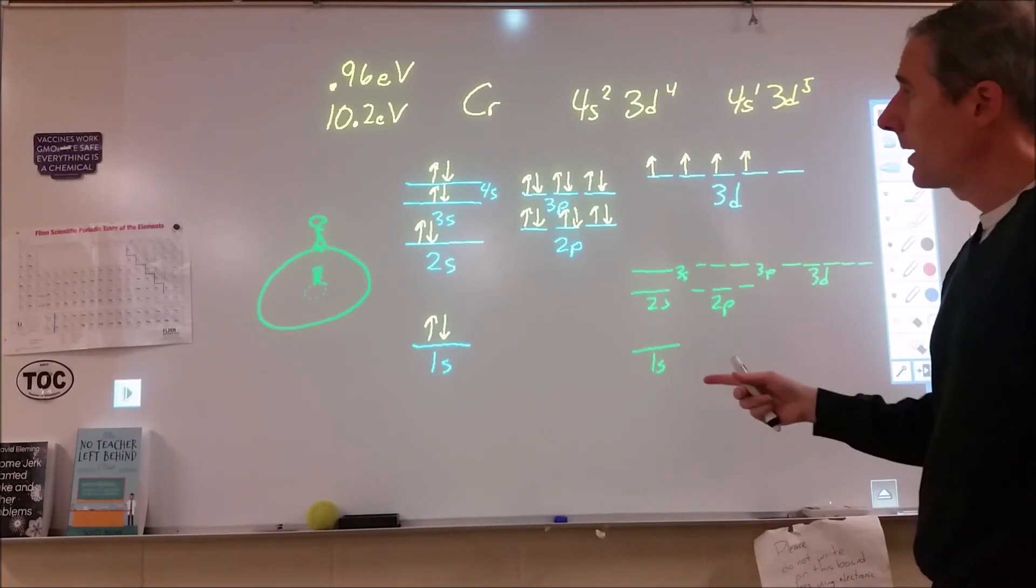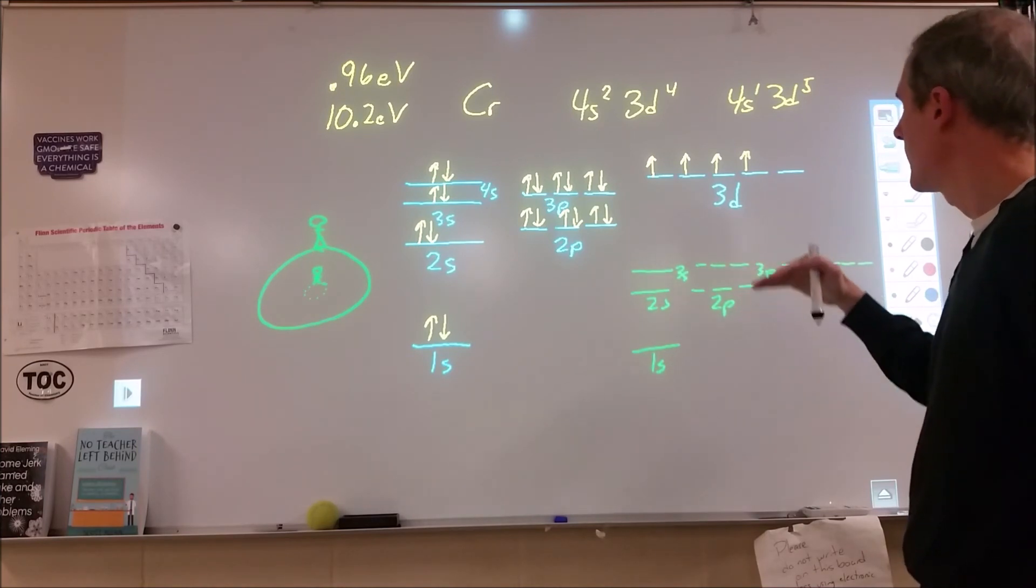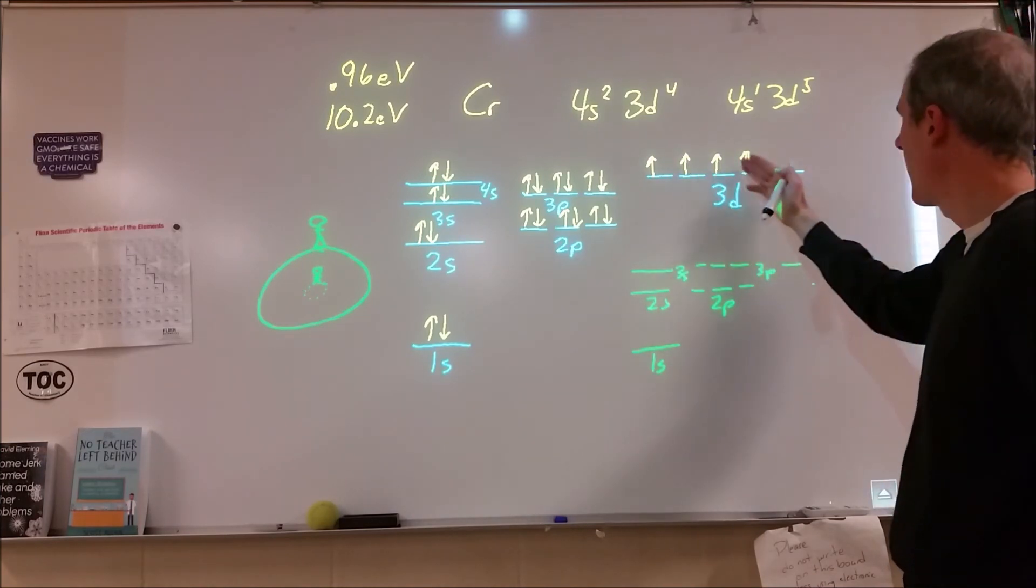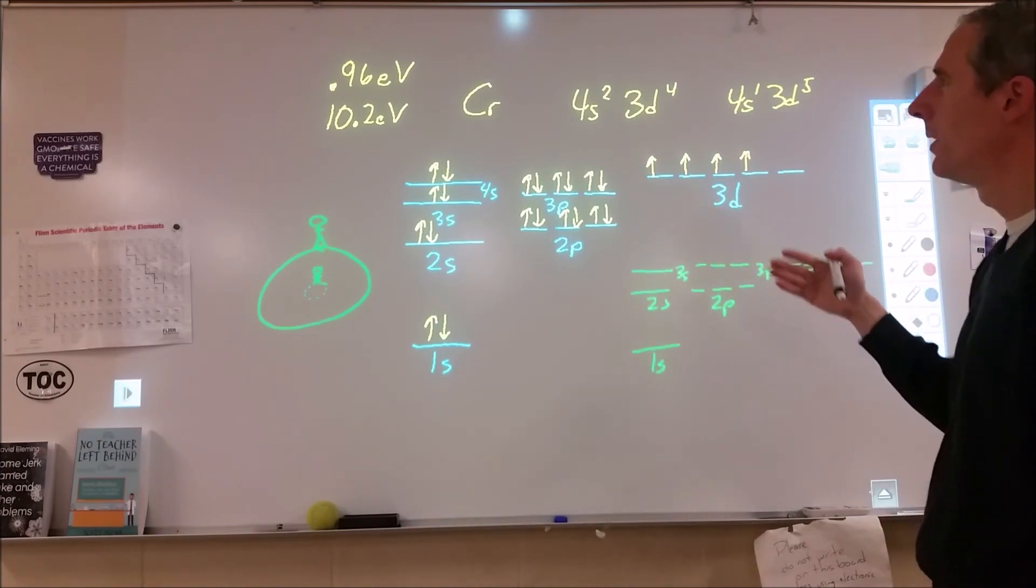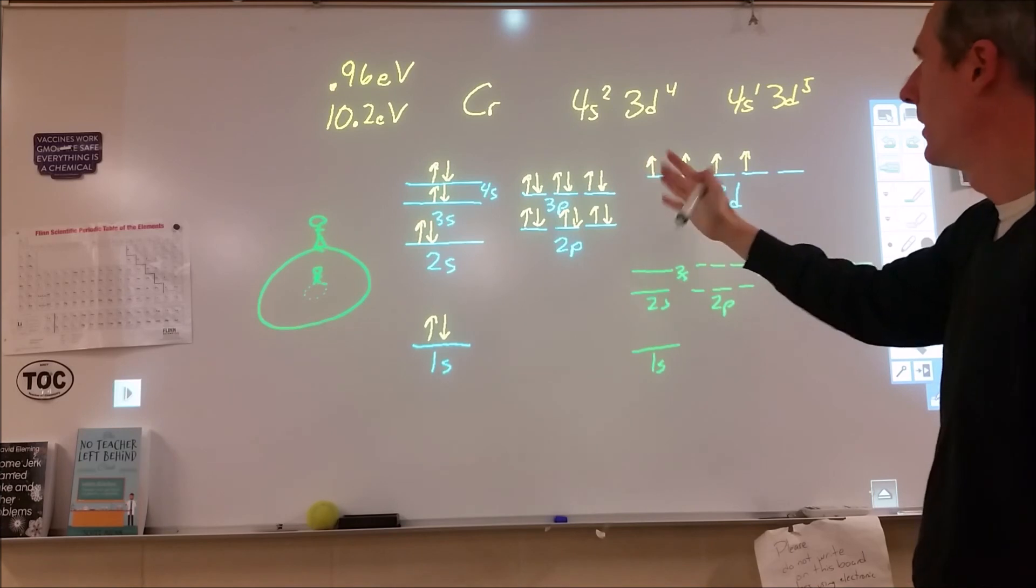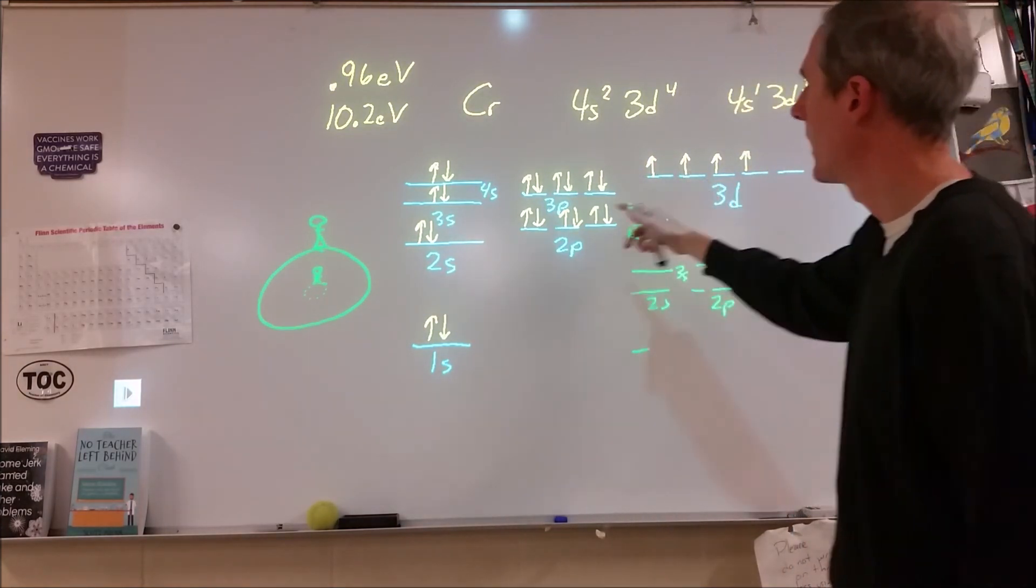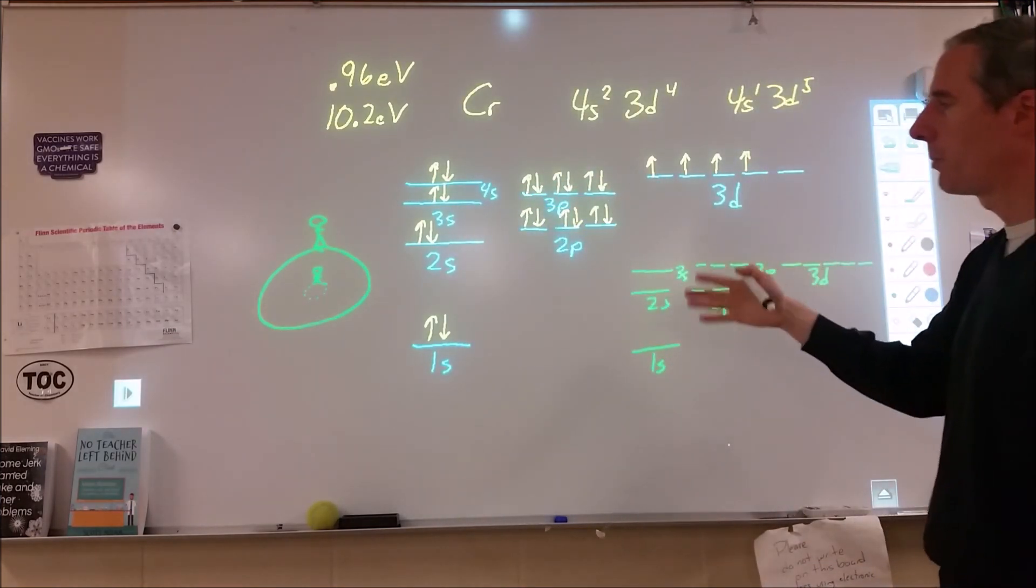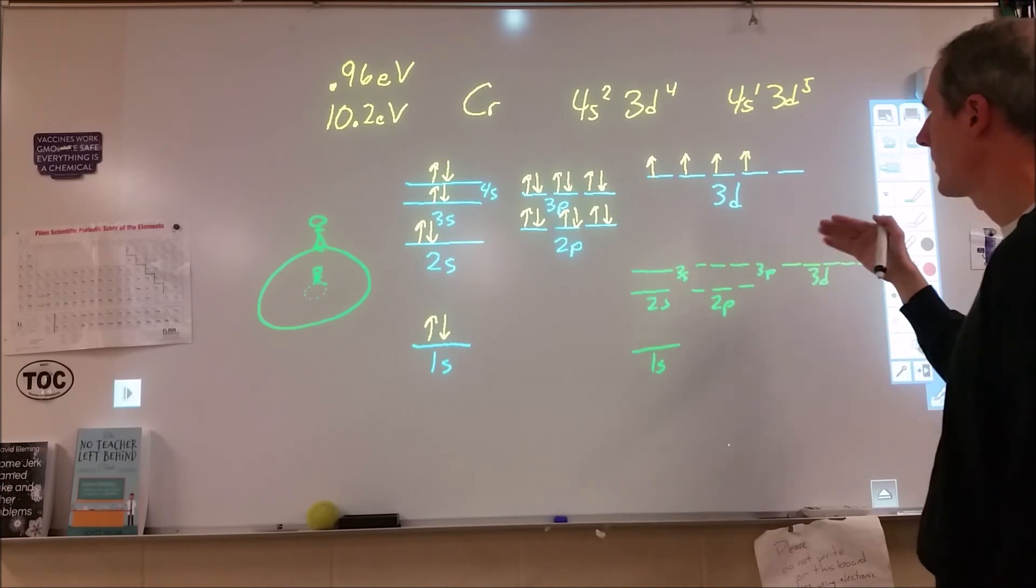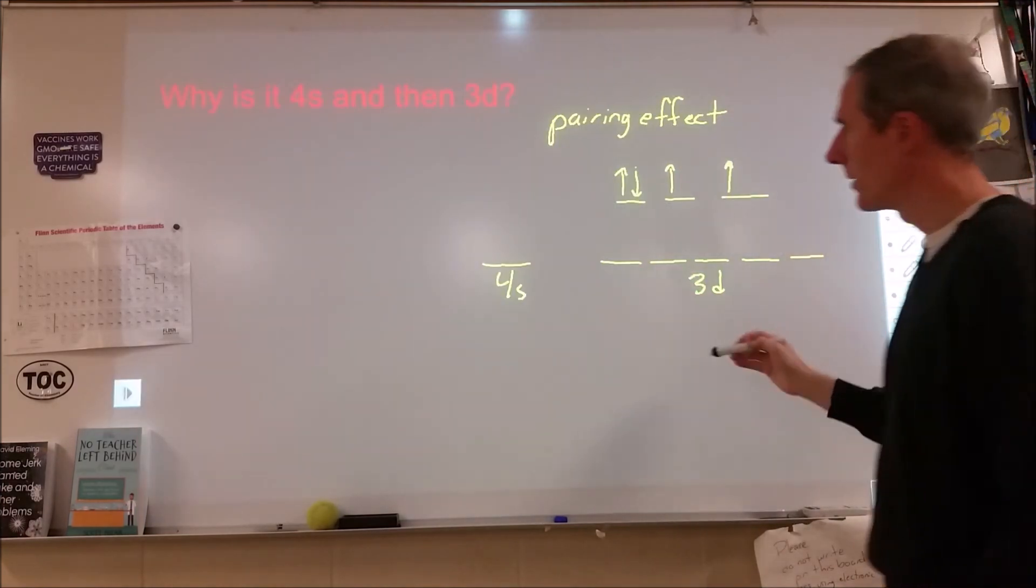So anyway, so when you see exceptions to these, it's not just chromium, it's not just copper. There's actually a whole bunch of them. It's not based on having a half filled or full shell that's stable. It's more about how much, how big the difference is between pairing the electrons and the energy gap between the things. And so it can matter how many protons you have, sometimes different ions that are isoelectronic, like different electron configurations. It's very inconsistent.